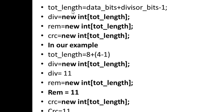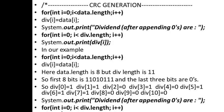The total length is calculated as data_bits plus divisor_bits minus 1, which gives 8 + 4 - 1 = 11. This total length represents the maximum length of bits we will be dividing. The remainder, CRC, and dividend arrays are all initialized with this total length of 11. Zeros are then appended to the data to fill the total length.